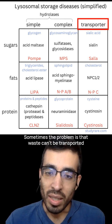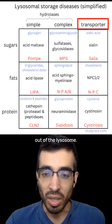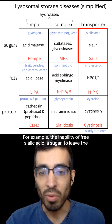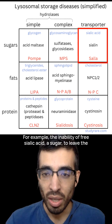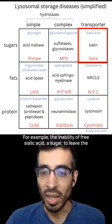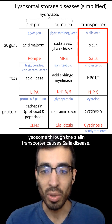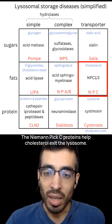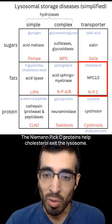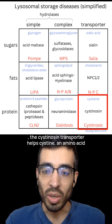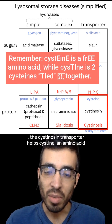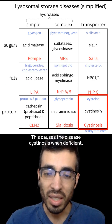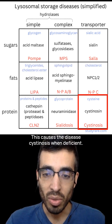Sometimes the problem is that waste can't be transported out of the lysosome. For example, the inability of free sialic acid, a sugar, to leave the lysosome through the sialin transporter causes Sala disease. The Niemann-Pick C proteins help cholesterol exit the lysosome, and the cystinosin transporter helps cystine, an amino acid derivative, leave the lysosome. This causes the disease cystinosis when deficient.